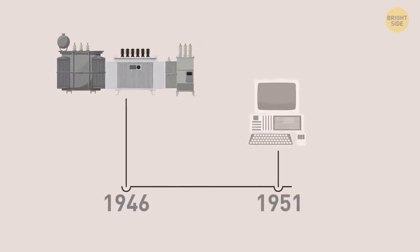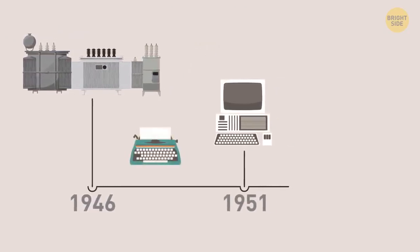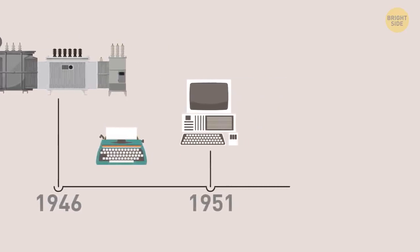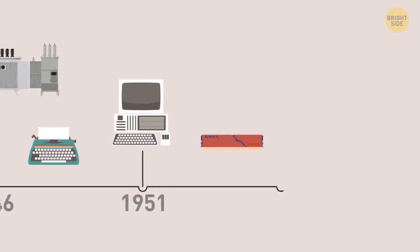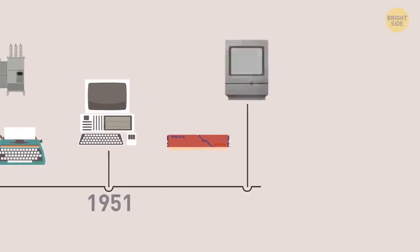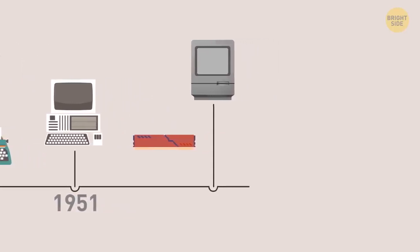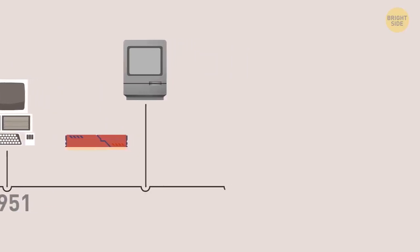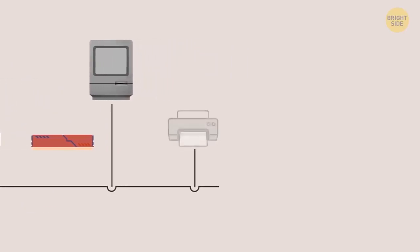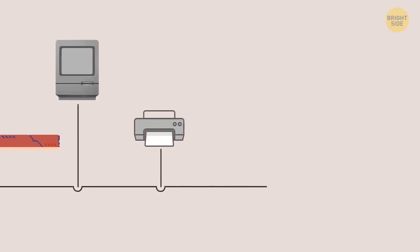In 1951, they got rid of vacuum tubes and replaced them with transistors. And at the same time, the first commercial computer was released to the public. Soon, the computer started taking more modern shape. Over 100 computer programming languages, memory, and operating systems appeared. They even included types of storage, like tape and disks, and even printers.